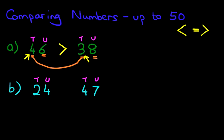We always start on the left hand side, so we've got 2 tens here and we've got 4 tens here. This is very simple — 2 is less than 4. Because these two digits are not the same, we don't have to look at the units to work out the answer. So 24 is less than 47. In both of these examples we can check that the symbol is pointing to the smaller number.